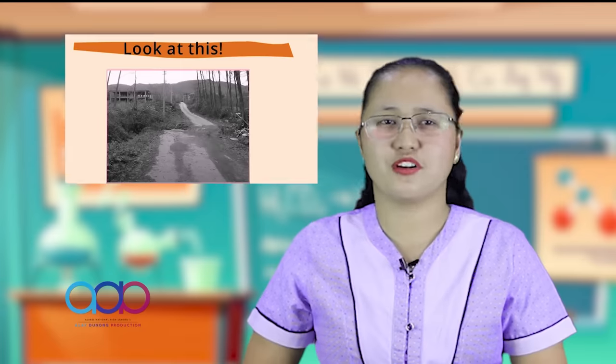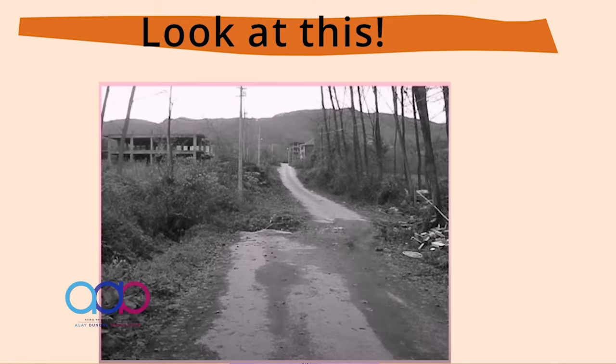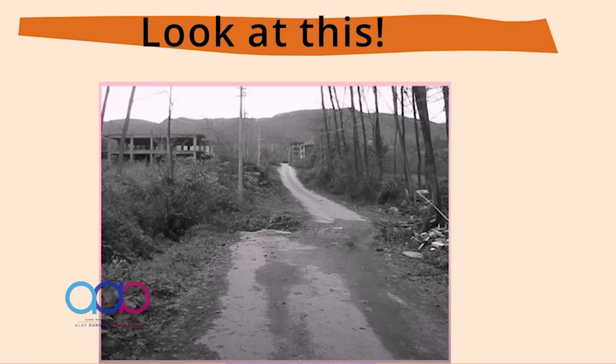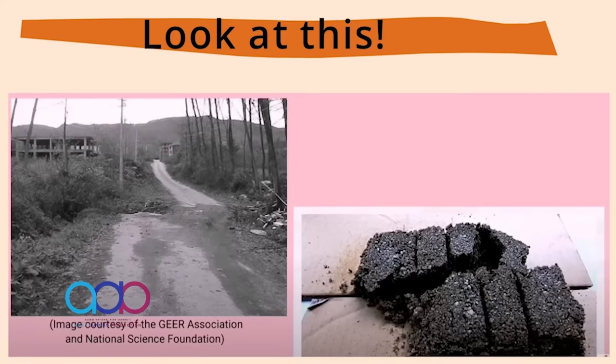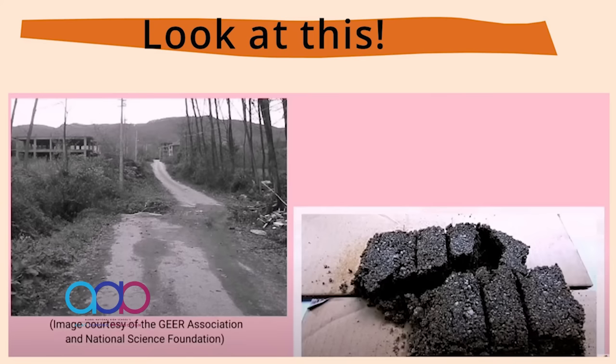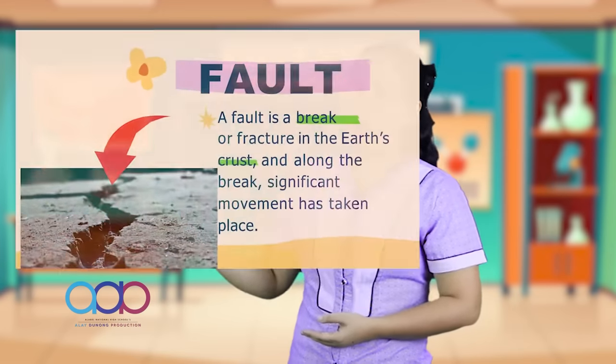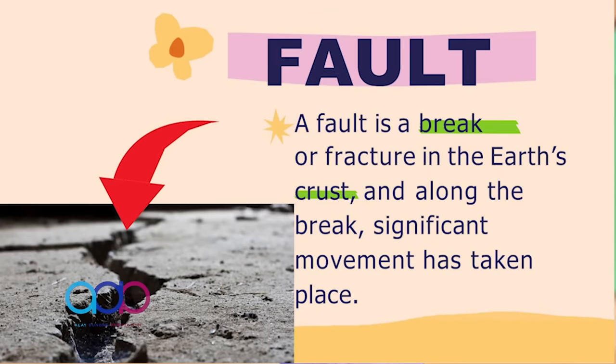Try to look at this picture carefully. Maybe you are thinking that the road was originally in one piece, but the road is no longer continuous. There is a cut across the road and now there are two sections. One section has moved with respect to the other. Compare what you see in the picture and what you saw in the activity. Is there something in the picture that looks like what was formed in the activity? Based on the activity and the picture, you can probably guess what a fault is by now. A fault is a break or fracture in the Earth's crust, and along the break, significant movement has taken place.